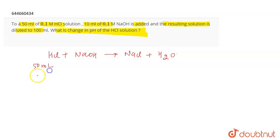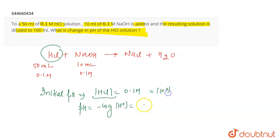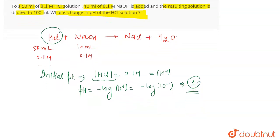We are given 50 ml of 0.1 M HCl and 10 ml of 0.1 M NaOH. If we talk about the initial pH of the solution, the concentration of HCl is 0.1 M. When HCl dissociates, we get 1 H⁺ ion and 1 Cl⁻ ion, so the concentration of H⁺ equals the concentration of HCl. Therefore, pH = −log[H⁺] = −log(10⁻¹) = 1. So initially, the pH of HCl is equal to 1.